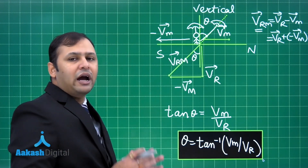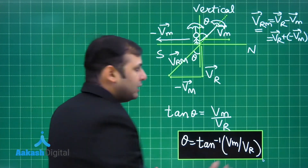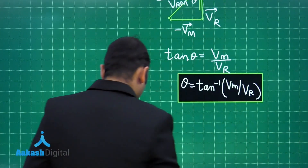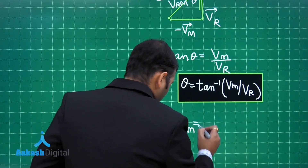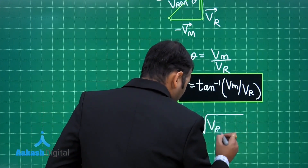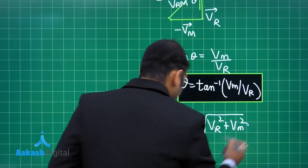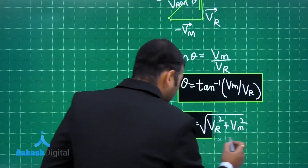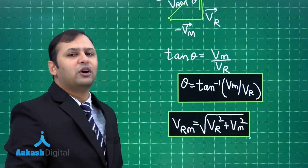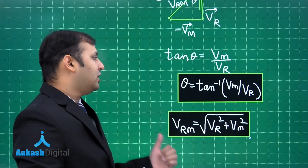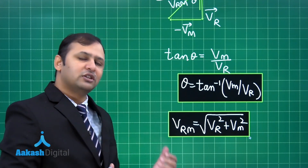The magnitude of the velocity of rain with respect to man is: VRM = √(VR² + VM²). These are the two key equations to remember for solving rain-and-man numerical problems. Let's now move to the next section — the numericals.